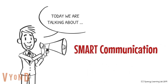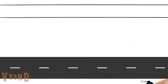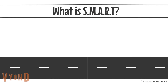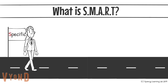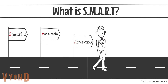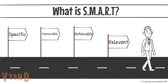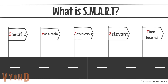Smart Communication. The SMART model is widely used as a management tool for objective setting and project management. In this acronym, S stands for Specific, M for Measurable, A for Achievable, R for Relevant, and T for Timebound.